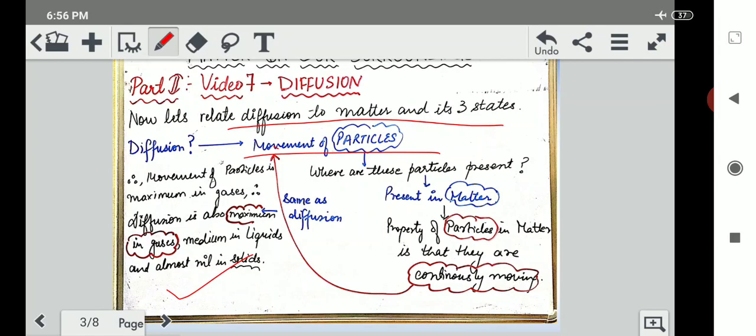And in which three states of matter is the movement maximum? We have just studied that gases having the loosest forces of attraction have the highest movement because of having highest kinetic energy. Thus diffusion is maximum in gases, medium in liquids and almost nil in solids. Obviously solids have the strongest particle force, very strong bond and no kinetic energy, thus no movement.